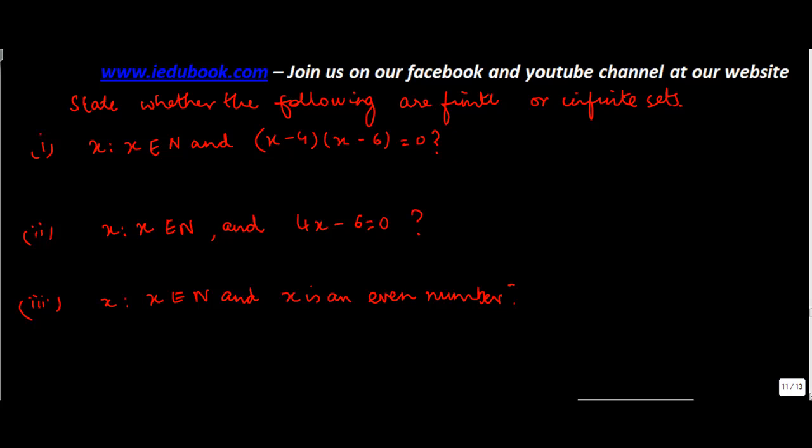I have written them in a fast manner but let's see them one by one. x such that x belongs to N - N here refers to the natural numbers. So x is one of the natural numbers and (x - 4)(x - 6) is equal to 0. Now based on your past experience you know that if (x - 4)(x - 6) is equal to 0, then either x minus 4 is equal to 0 or x minus 6 is equal to 0.